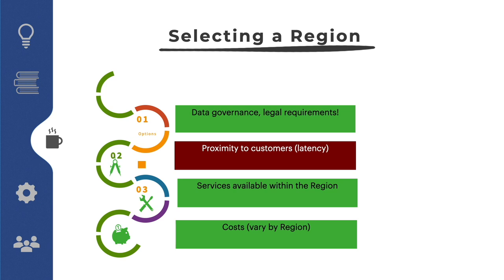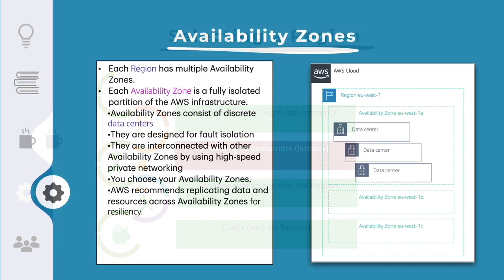Selecting the right region for your services, applications, and data depends on several factors. One essential consideration is data governance and legal requirements — in certain countries, due to local laws, some information cannot leave the country's borders. For example, an Irish customer with life science data in a database must keep that data in the same country per the EU Data Protection Act. It is recommended to run applications and store data in a region as close as possible to your users to reduce latency. You can use a tool like CloudPing to test latency between your location and all AWS regions.